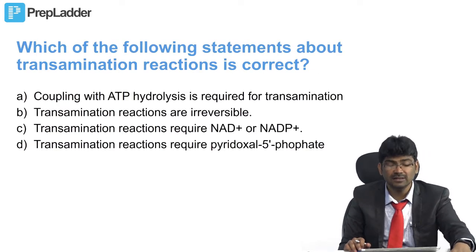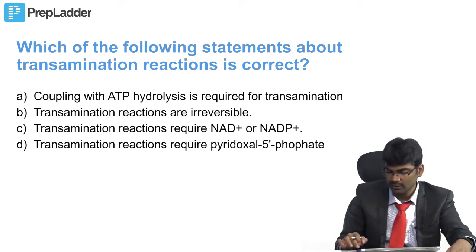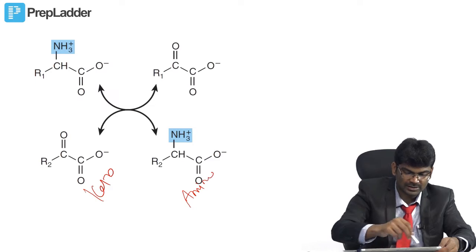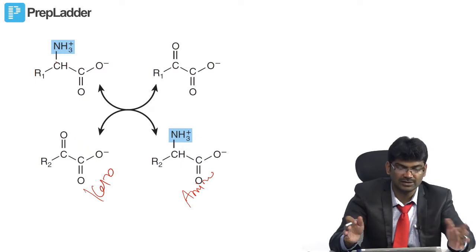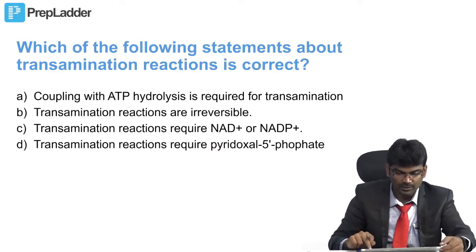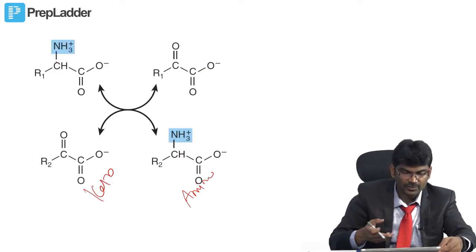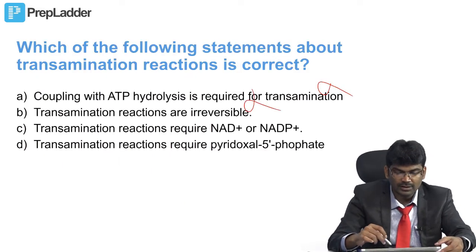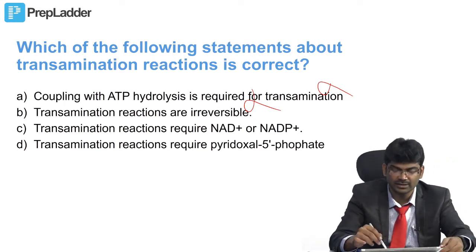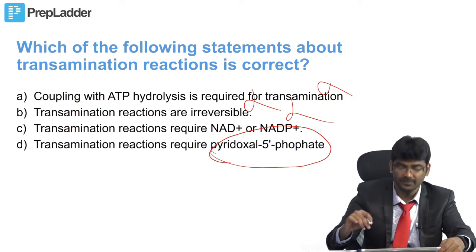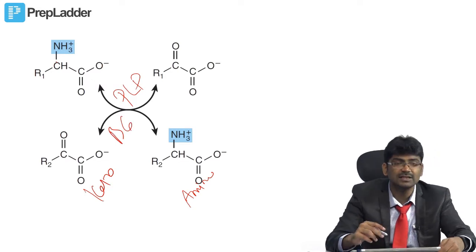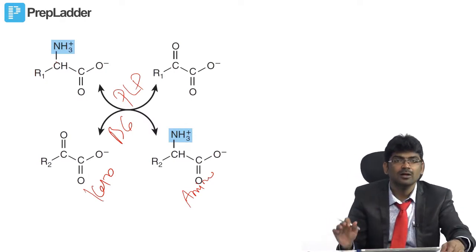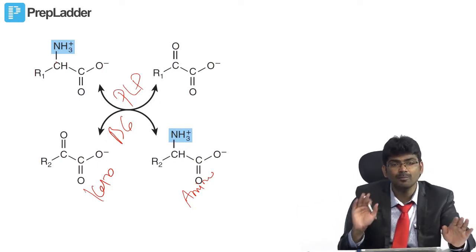Which of the following statements about transamination reaction is correct? Transamination involves transfer of amino groups: a keto acid becomes an amino acid, and an amino acid becomes a keto acid. Coupling with ATP hydrolysis is required — wrong, there is no ATP involved. Transamination reactions are irreversible — wrong, they are completely reversible. Transamination requires NAD+ or NADP+ — wrong, that is glutamate dehydrogenase. Transamination requires pyridoxal phosphate (vitamin B6) — yes, correct. It is a ping-pong bi-bi reaction.